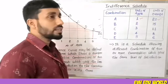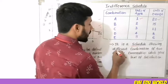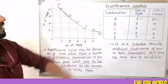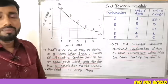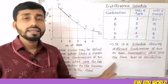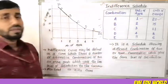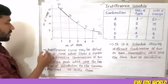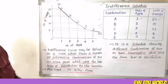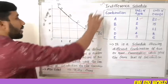This is what we call an Indifference Schedule: it is a schedule showing different combinations of two or more commodities which yield the same level of satisfaction. When we plot this on a graph, it becomes the Indifference Curve, also known as the Iso-utility curve.